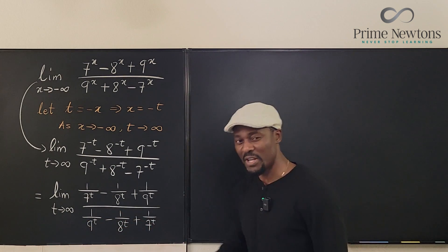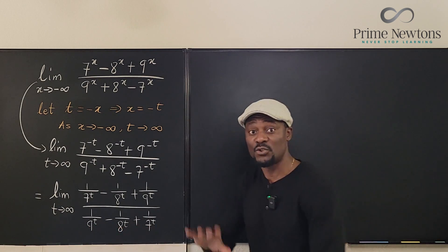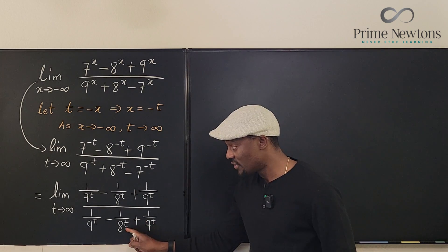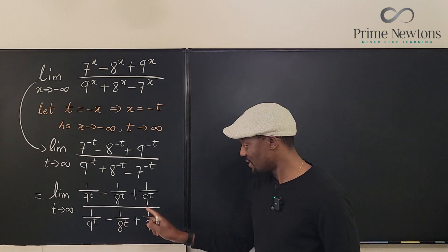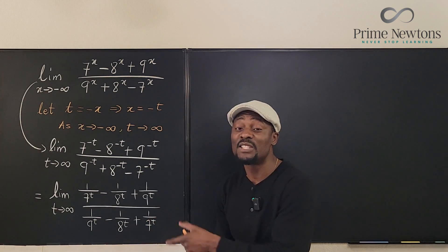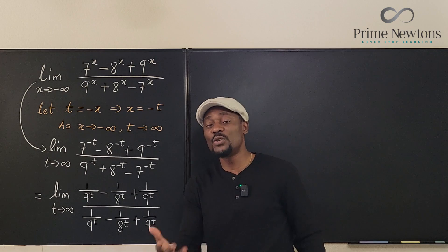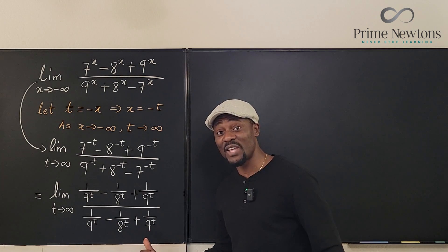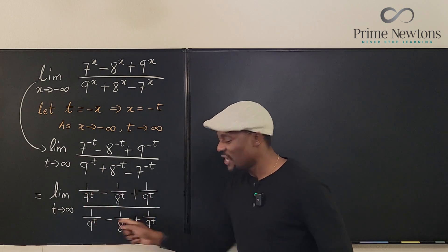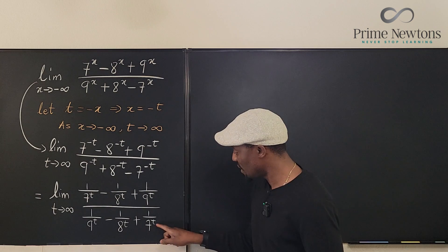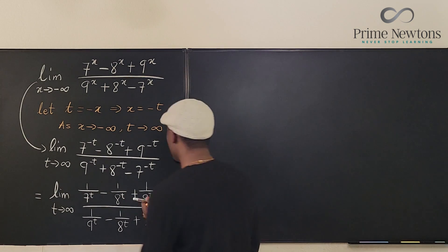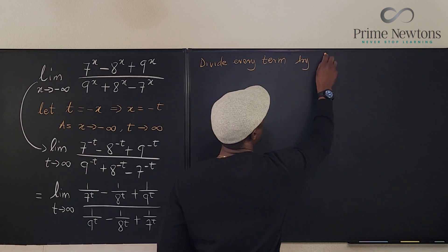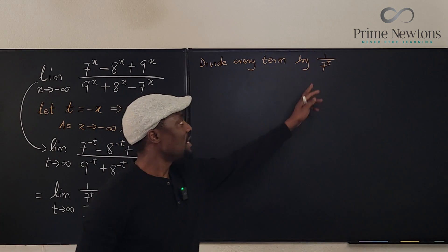Which of these terms is the largest in the denominator, ignoring the exponent t? In terms of magnitude: 1/9 is less than 1/8, and 1/8 is less than 1/7, so 1/7^t is the biggest term in the denominator. That's what you always look for. Then you take that biggest term and use it to divide everything in the rational expression. Dividing by 1/7^t is the same as multiplying by 7^t.